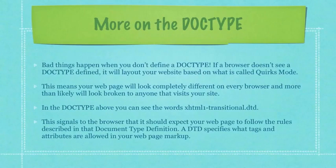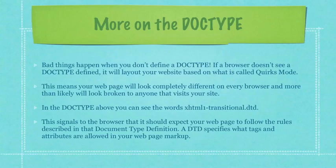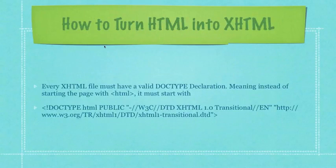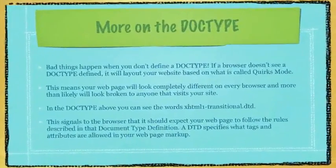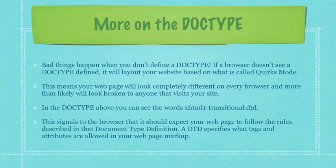Bad things happen when you don't define a doctype. If a browser doesn't see a doctype defined, it will lay out your website based on what is called Quirks mode. This means your webpage will look completely different on every browser and will more than likely look broken to anyone that visits your site. In the doctype above, you can see the words XHTML 1.0 Transitional .dtd — here is the transitional tag I'm talking about. This signals to the browser that it should expect your webpage to follow the rules described in that document type definition.